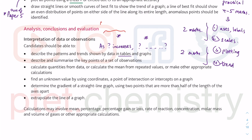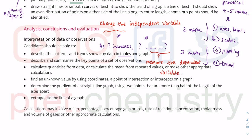The independent variable is what you change in the experiment — typically this results in the x-axis. What you measure is the dependent variable, which typically results in readings for the y-axis. Some other factors can affect your reading, but you keep them constant — those are called control variables. Control variables can affect your y-axis reading, but you keep them not changing.